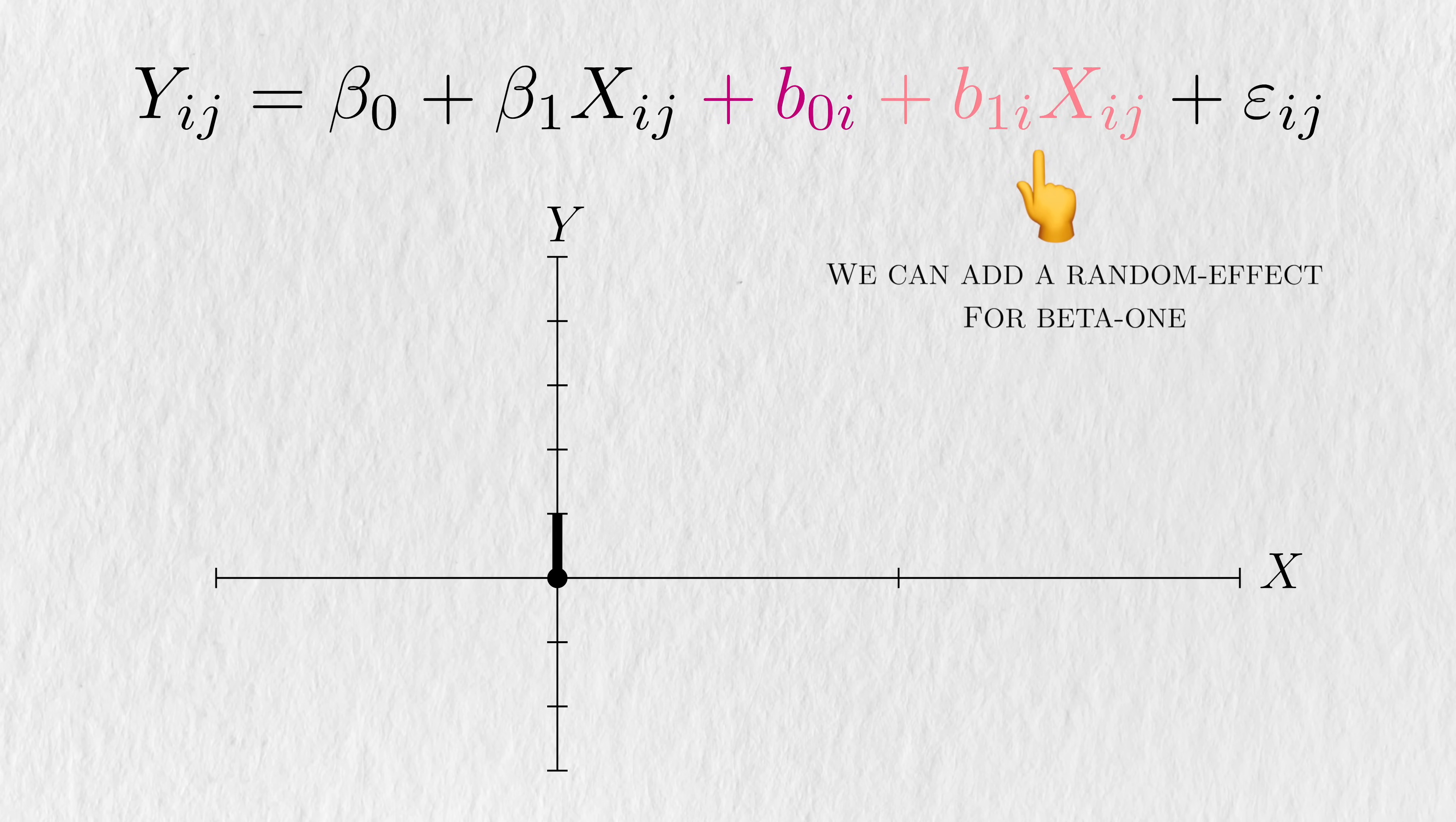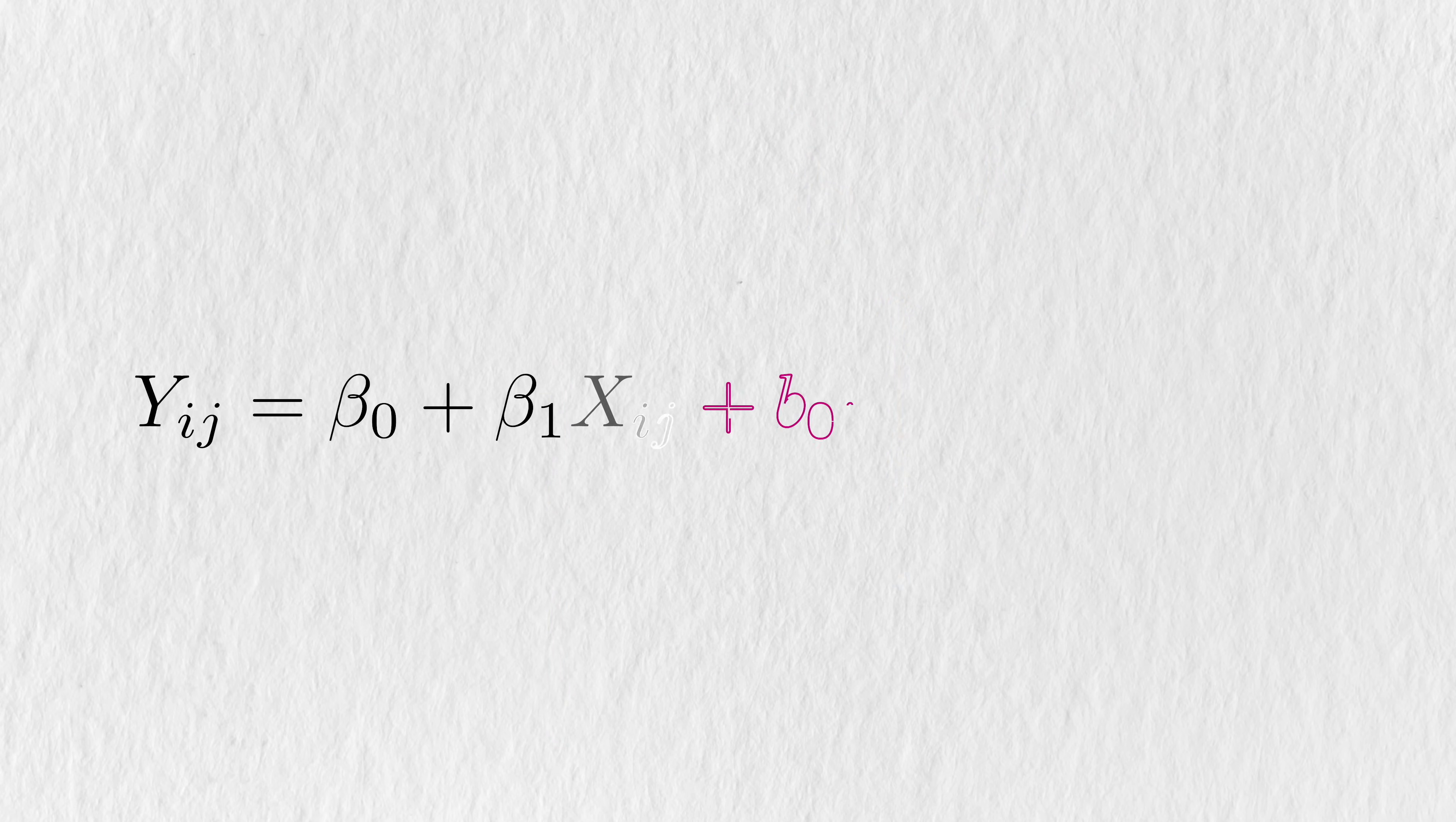Other times, we may have reason to believe that the treatment effect will also slightly differ among individuals. In this case, we can add another subject-specific term, but for beta1. Likewise, this model is a random intercept and slope model, since both the intercept and the slope have person-specific deviations.